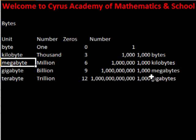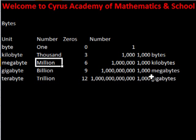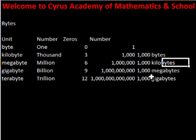Next is a megabyte. What is the number? A million. How many zeros are in there? Six. And how many kilobytes can go into a megabyte? A thousand.